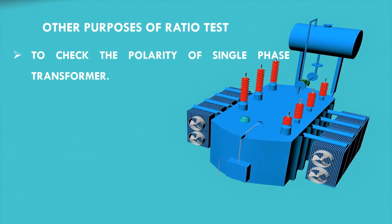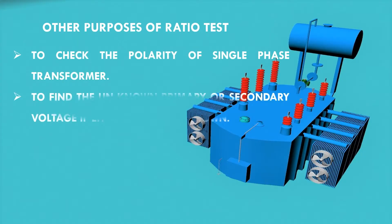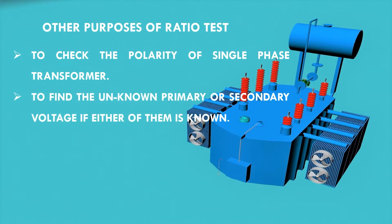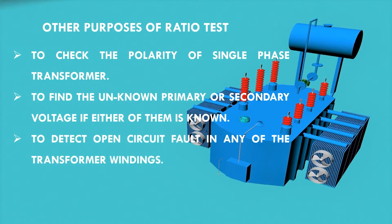TTR can also be used to find the unknown primary or secondary voltage if either of them is known. Similarly, we can find the number of turns on the primary or secondary side if either is known. TTR is also used to detect open circuit faults in any of the transformer windings.